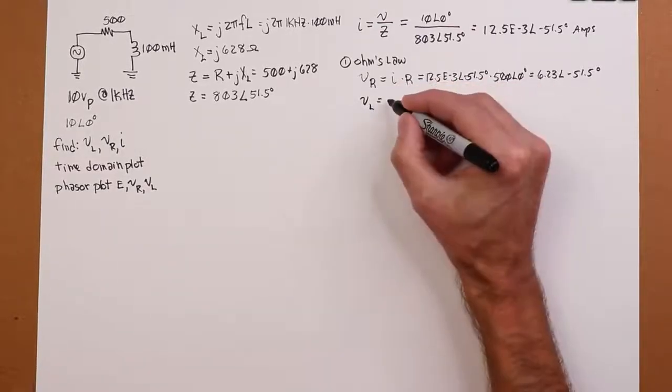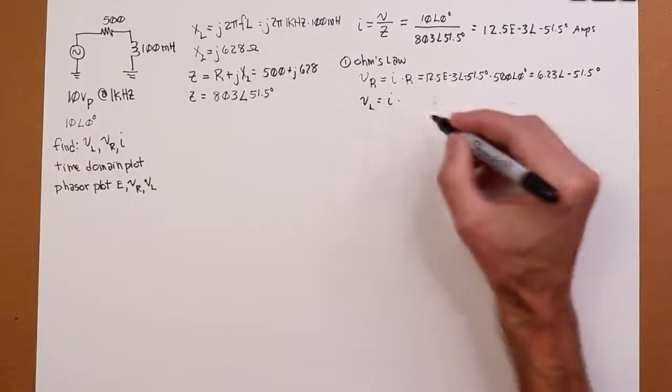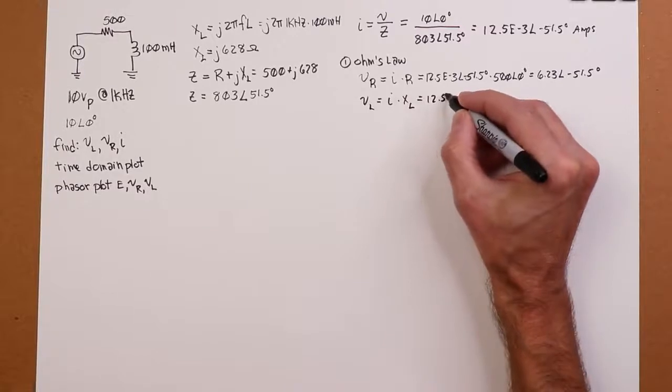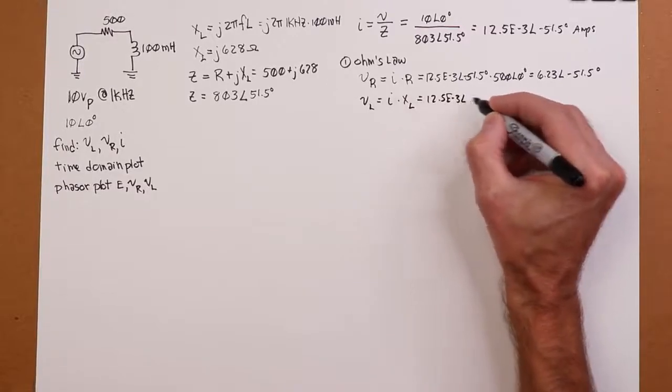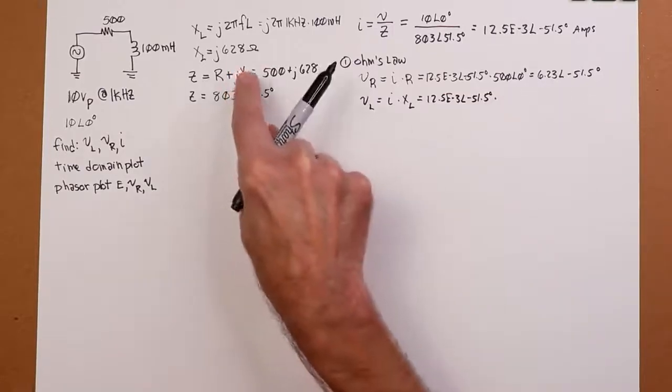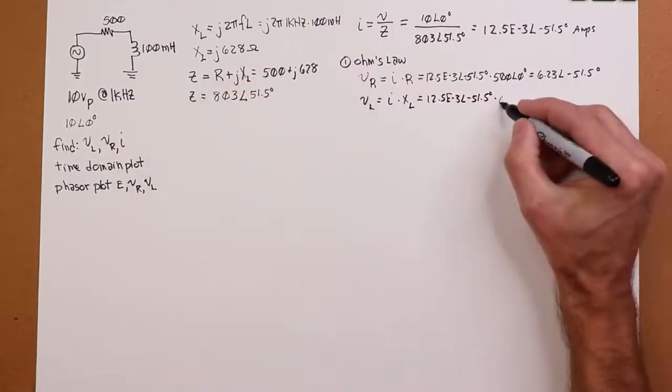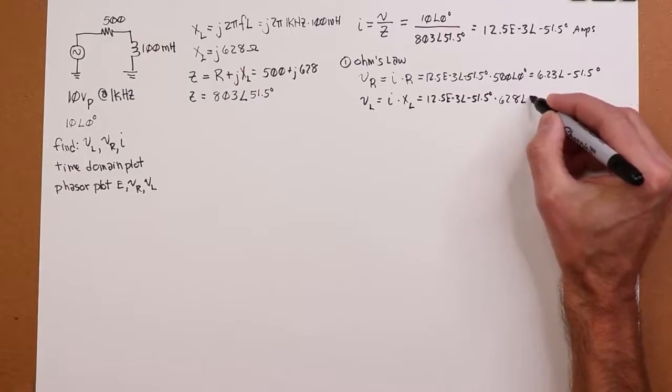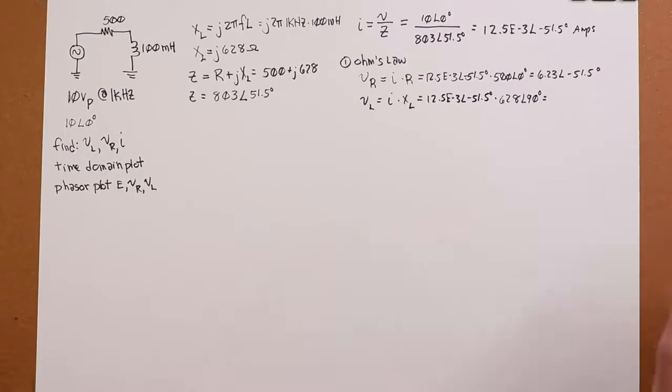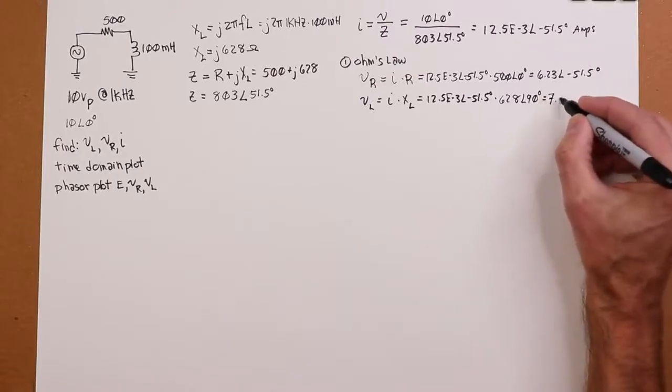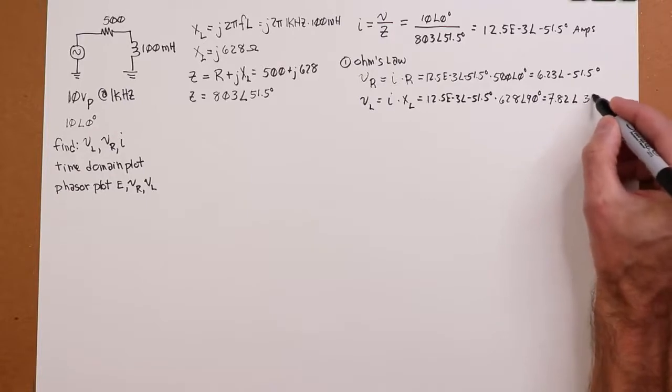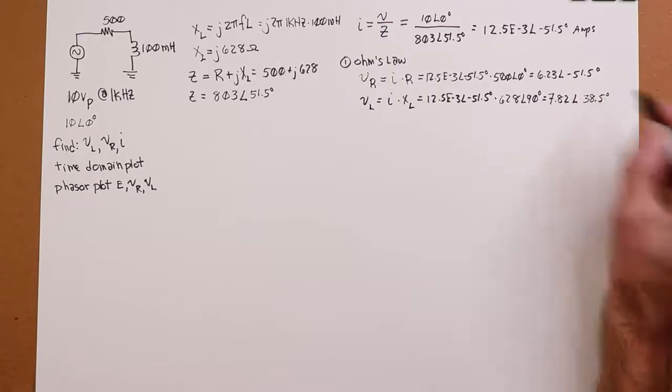Okay, continuing. We look at VL. So same deal. I times X of L. Same current. And for X of L, we know that's J628, or you could say that is 628 at an angle of 90. And we grind that out. We get 7.82 at an angle of 38.5 degrees.